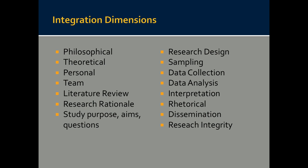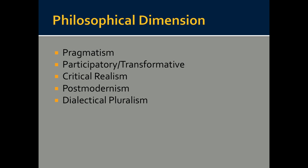It might seem a little overwhelming, but let's go through these one at a time. The philosophical dimension refers to orienting the research based on philosophical assumptions — it can be pragmatism, participatory transformative, critical realism, postmodernism, or dialectical pluralism. Each of these has ontological, epistemological, and axiological features.